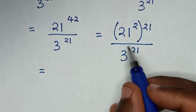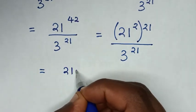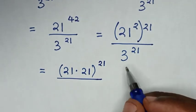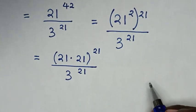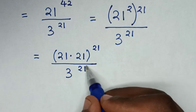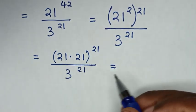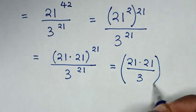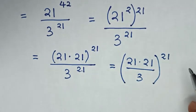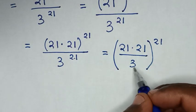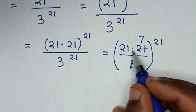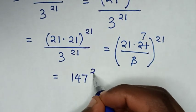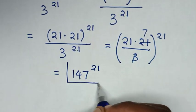Then it will be equal to 21 square, same as 21 times 21, then bracket power of 21. Now in here we have same power of 21, so it will be equal to 21 times 21 over this exponent 3, bracket same power of 21. Then in here we have same power of 21. The next step: to simplify, 21 divided by 3 is 7. So 21 times 7 is equal to 147, then power of 21. Therefore this is our final answer.